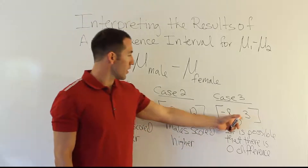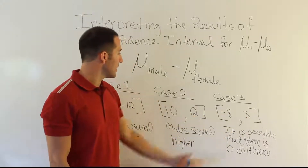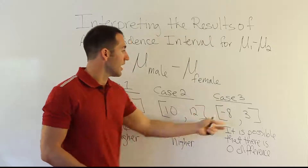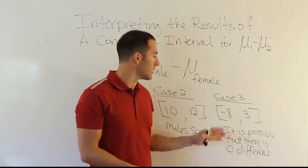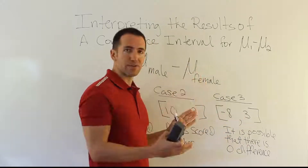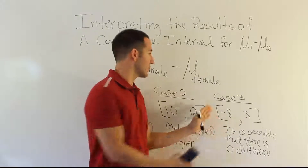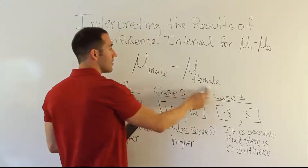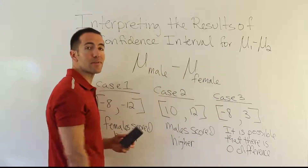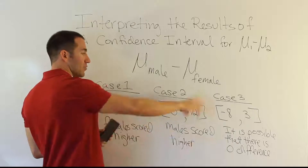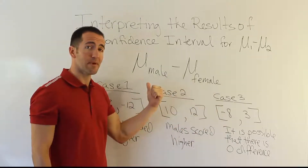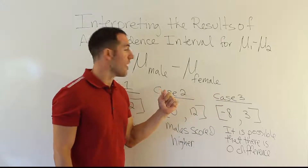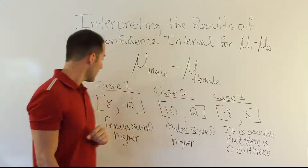Looking at this interval a little more closely: it's a little more negative than positive — negative 8 to positive 3, so more numbers on the negative side. That means the sample mean for the female group is higher than the sample mean for the male group. So in Case 3, the female sample mean was higher than the male sample mean, but it wasn't significantly higher — it wasn't so high that you could say for certain females did better. That could just be the normal fluctuation in sample data.